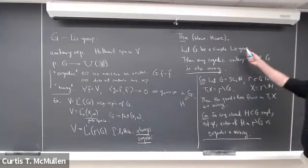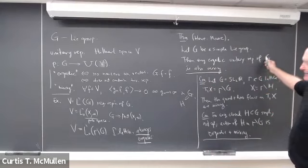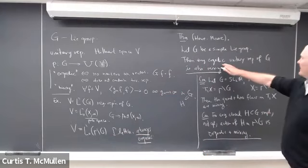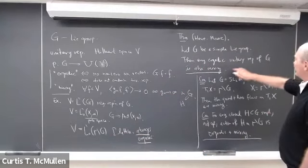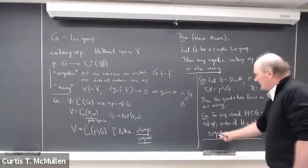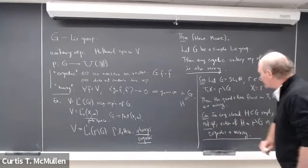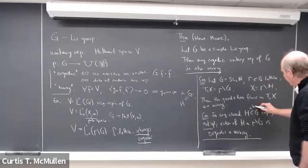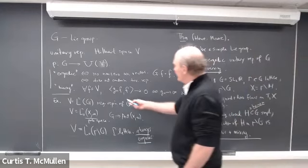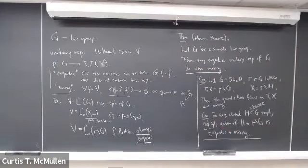How does that follow from the Howe-Moore theorem? The action of G on Γ\G is always ergodic by transitivity, and mixing passes to subgroups. If you have a closed non-compact subgroup, the action is mixing. It's ergodic because, assuming H is non-compact, you can take elements of H tending to infinity, and H can't have any invariant vectors — that would violate the fact that the inner product ⟨H·f, f⟩ tends to zero for all vectors in the Hilbert space.